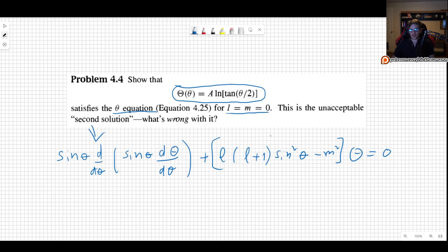And this is precisely the second solution that we talked about while we were solving the hydrogen atom, the angular part of the Schrodinger equation that is unacceptable, and we will discuss what is wrong with it.